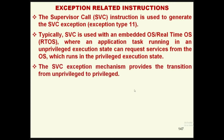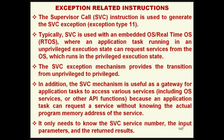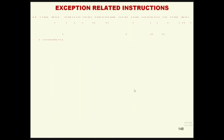An application task running in an unprivileged execution state can request services from the operating system which runs in the privileged execution state. The SVC exception mechanism provides the transition from unprivileged to privileged. It also serves as a gateway for application tasks to access OS services or other API functions, since an application task can request a service without knowing the actual program address — it only needs to know the supervisory call service number, the input parameters, and the return results.